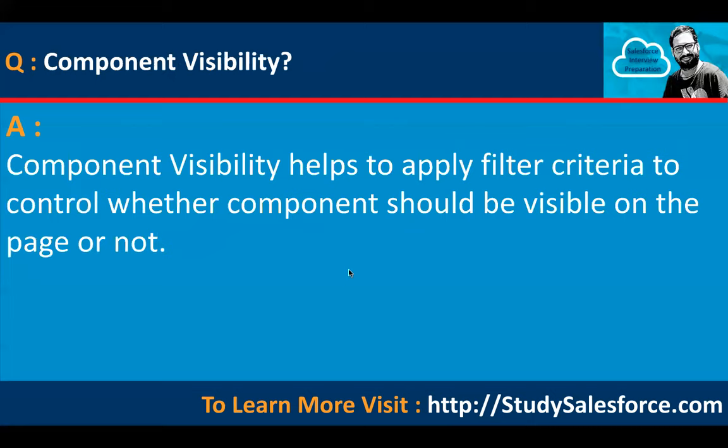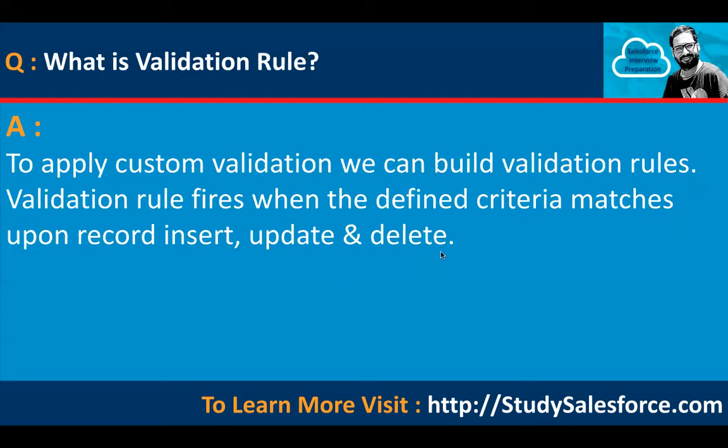What is component visibility? It helps to apply filter criteria to control whether components should be visible on the page or not. To apply component visibility, you need to edit your page — go to the top right corner, click the gear icon, select 'Edit Page,' and it will open App Builder. From there you can select a particular component and apply component visibility.